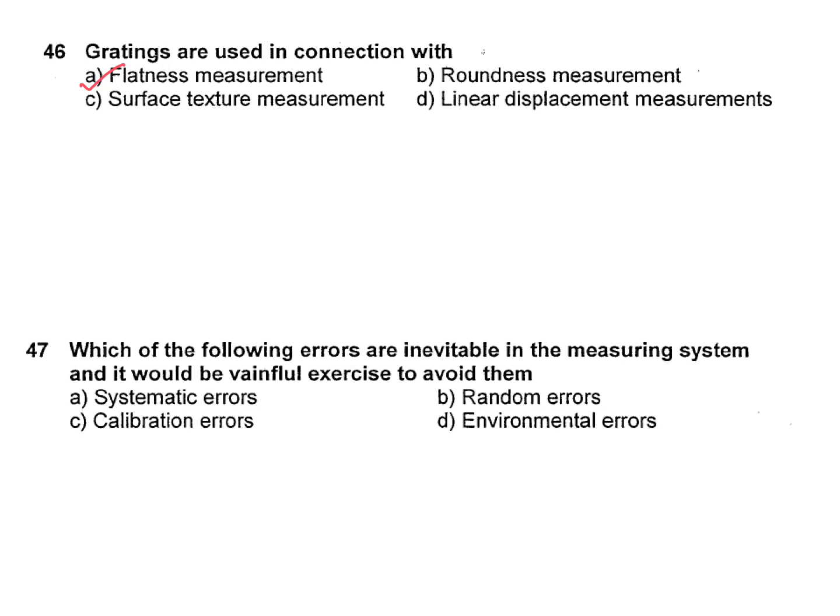Which of the following errors are inevitable in a measuring system? It would be a painful exercise to avoid them — we cannot avoid them. Options: A — systematic errors; B — random errors; C — calibration errors; D — environmental errors. The answer is random errors — we cannot avoid them.